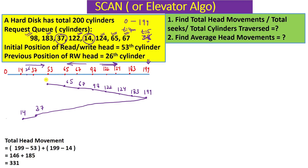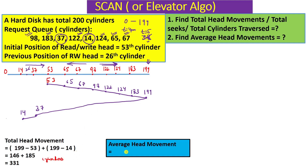Total head movements: starting at cylinder 53, moving to 199, then reversing to 14. The calculation is: (199 − 53) + (199 − 14) = 146 + 185 = 331 cylinders traversed. The average head movement is 331 divided by 8 requests, which equals 41.375.